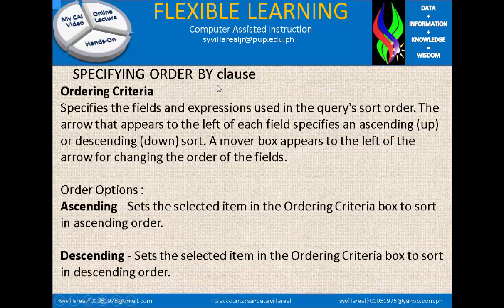Specifying the ORDER BY clause in ordering criteria specifies the field or fields and expressions used in the query sort order. The arrow that appears to the left of each field specifies an ascending (up) or descending (down) sort. A mover box appears to the left of the arrow for changing the order of the fields. We have two order options: ascending, which sets the selected item to sort in ascending order, and descending, which sets it to sort in descending order.